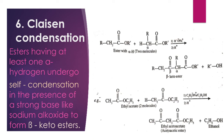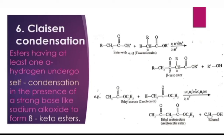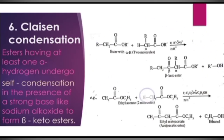The last reaction is Claisen condensation. Esters having at least one alpha hydrogen undergo self-condensation in the presence of a strong base like sodium alkoxide to form beta-keto esters. The alpha carbon is the carbon to which the COO group is attached. In general, two molecules of ester having at least one alpha hydrogen undergo self-condensation in the presence of sodium alkoxide to give a beta-keto ester.